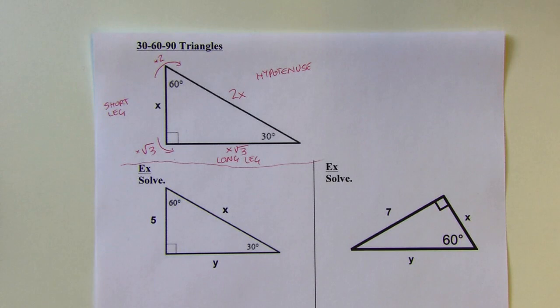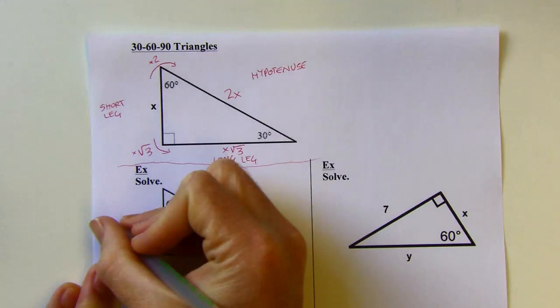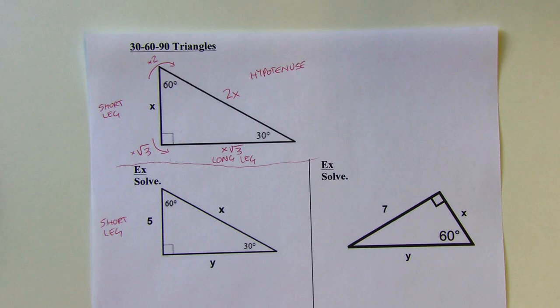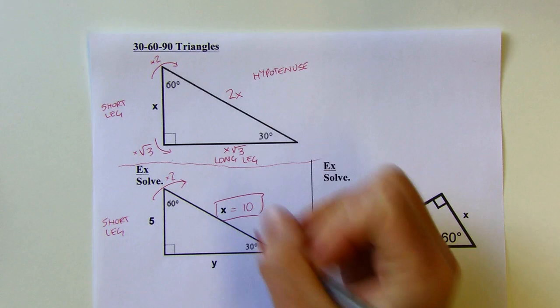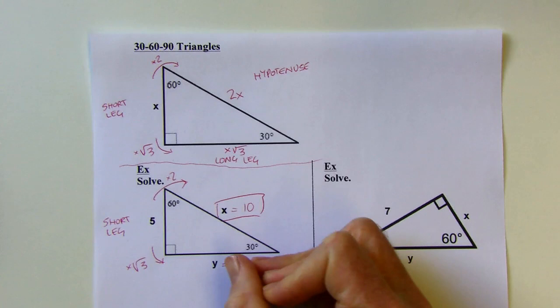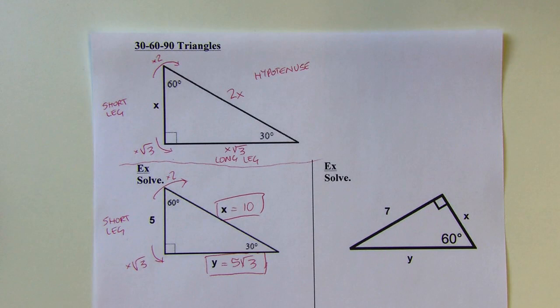My favorite side in a 30-60-90 to have is the short leg. I've got it here — the short leg is 5. Going from short leg to hypotenuse, I double it, so x is 10. Going from short leg to long leg, I multiply by the square root of 3, so that would be 5 root 3. It's pretty straightforward when you remember what to multiply by when you have the short leg.